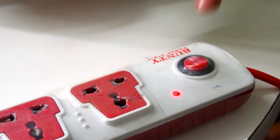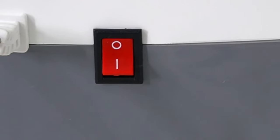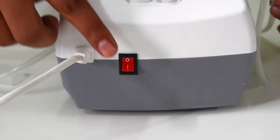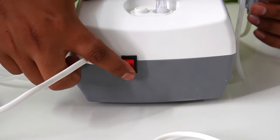Plug the compressor machine in and switch it on. To start the nebulization process, simply switch on the red button that is on the upper side of the machine.